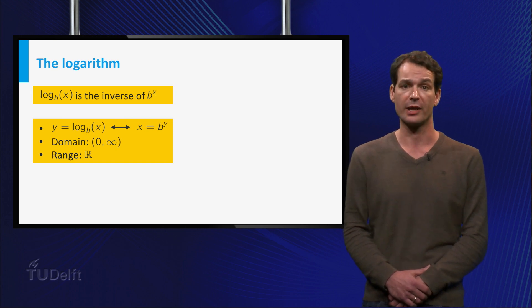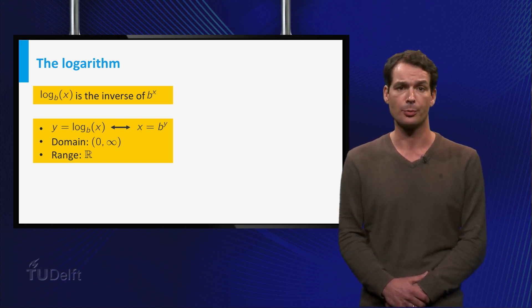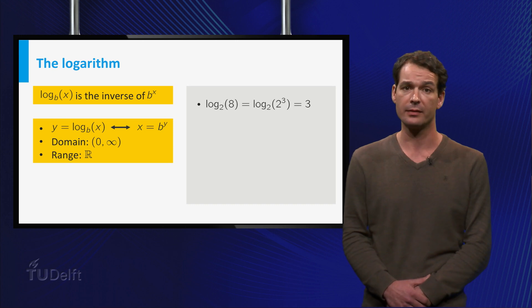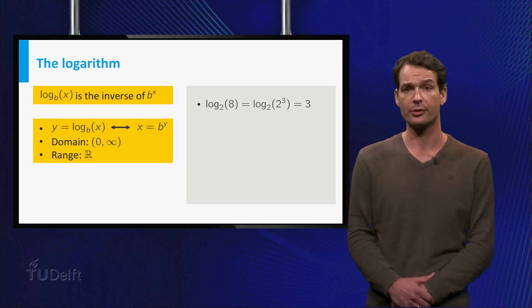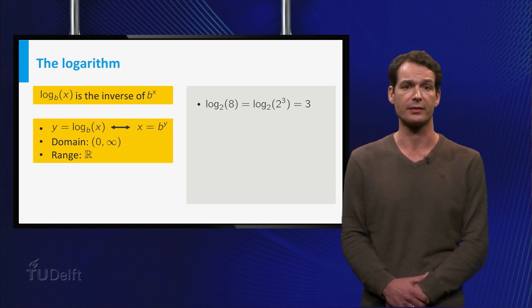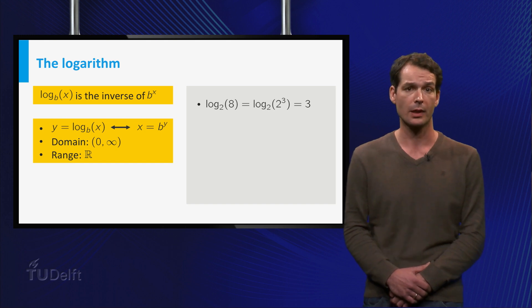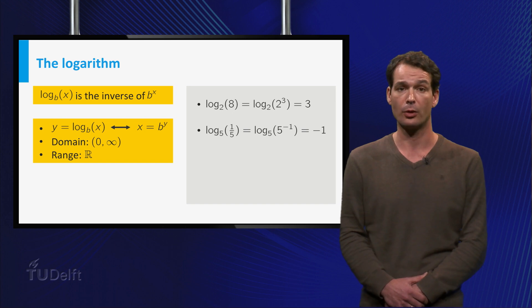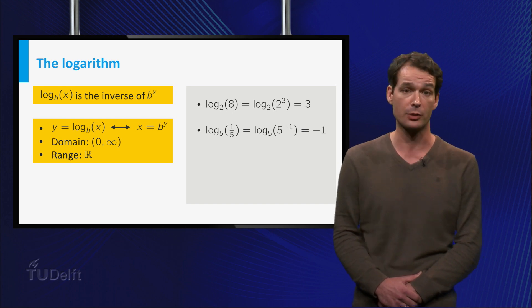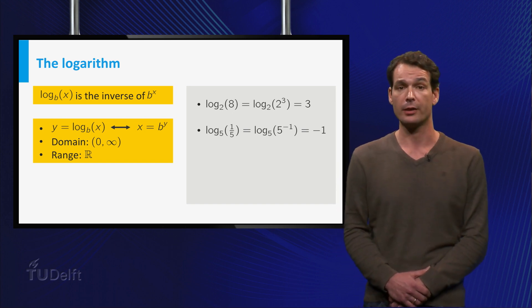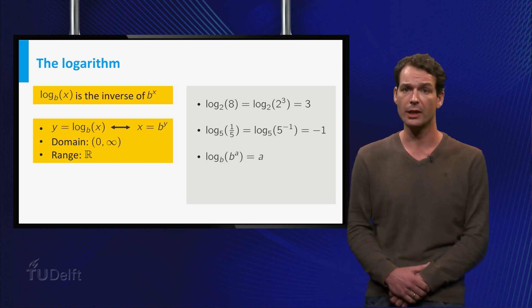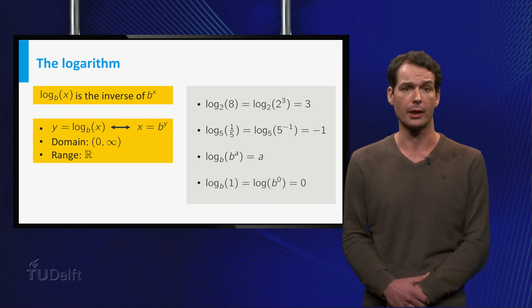The domain of log base b is the range of b to the power x, and the other way around. For example, log base 2 of 8 is equal to 3, because 2 to the power 3 equals 8. A logarithm can also be negative. For instance, log base 5 of 1 over 5 is equal to minus 1, because 5 to the power minus 1 equals 1 over 5. In general, log base b of b to the power a equals a.